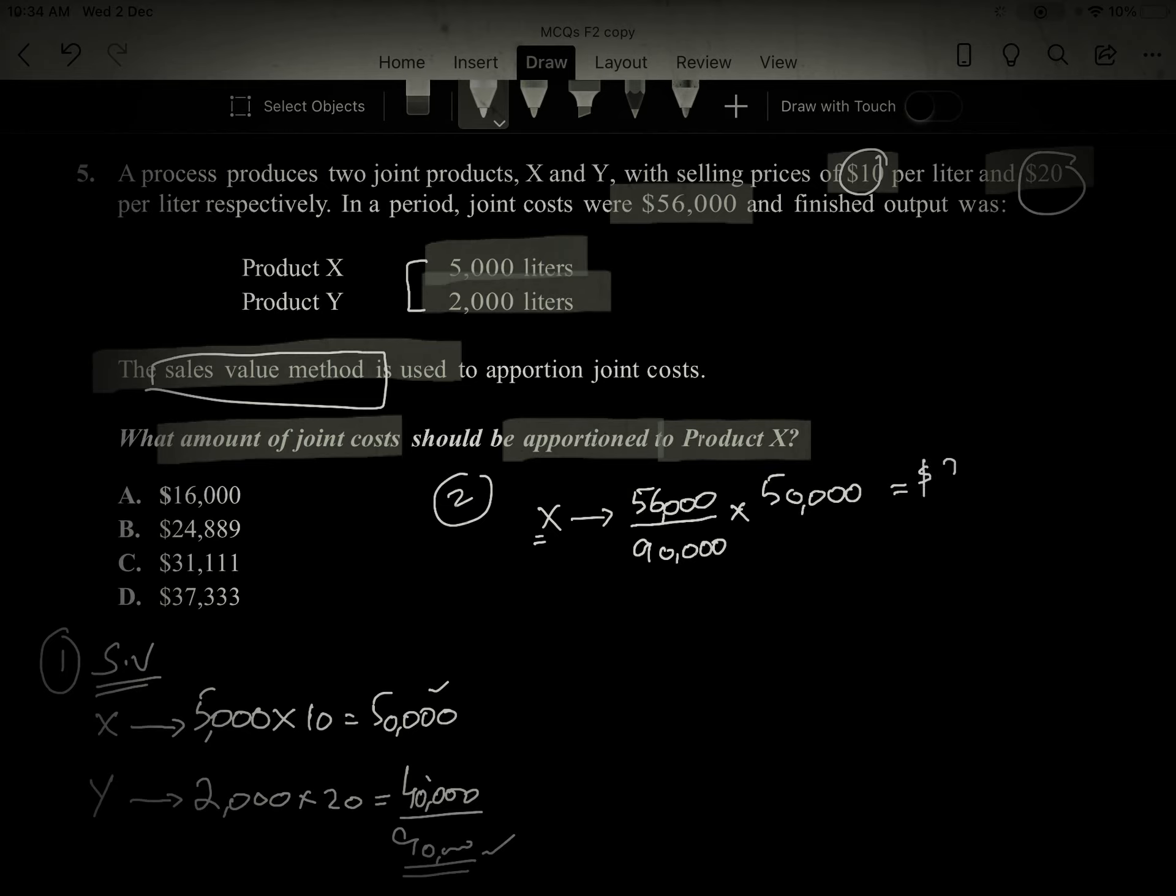So C is our answer, but let's calculate. That is $56,000 divided by $90,000, multiplied by the sales value. So the answer will be $24,889. That's going to be the answer.